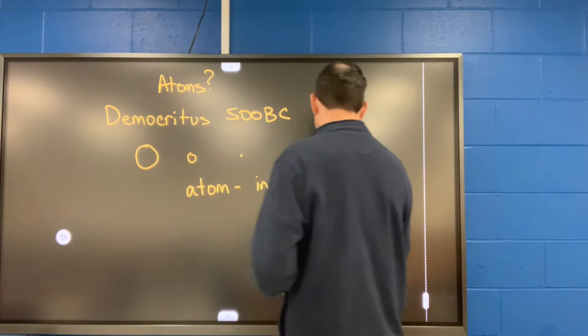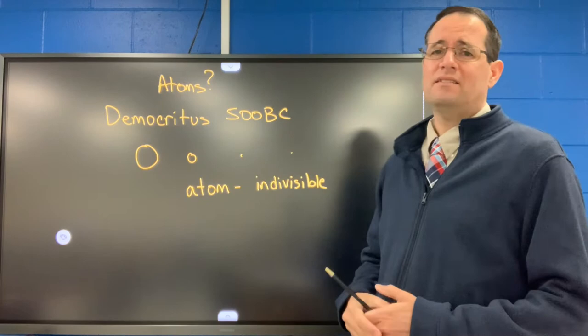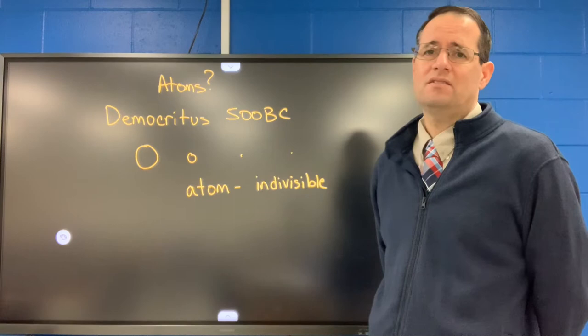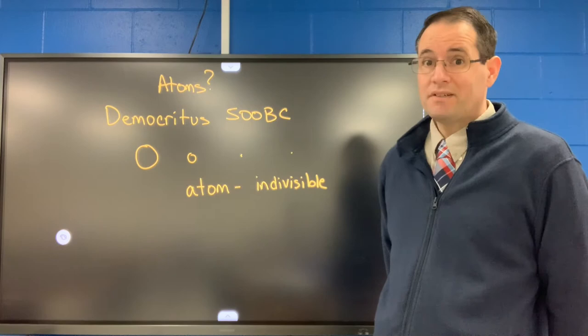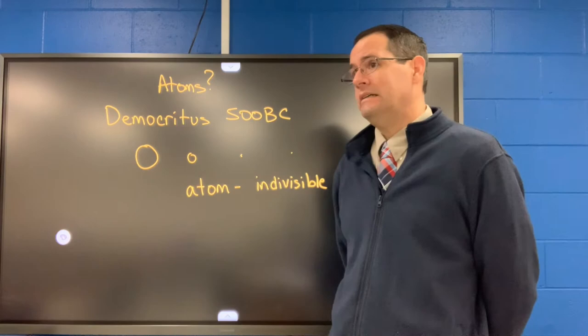That theory was promoted at a time when Socrates and other very famous philosophers were living. Socrates did not adopt the theory — he disagreed with it. He was very popular, so Democritus is not so well known. Because of that, this idea was shelved for thousands of years.